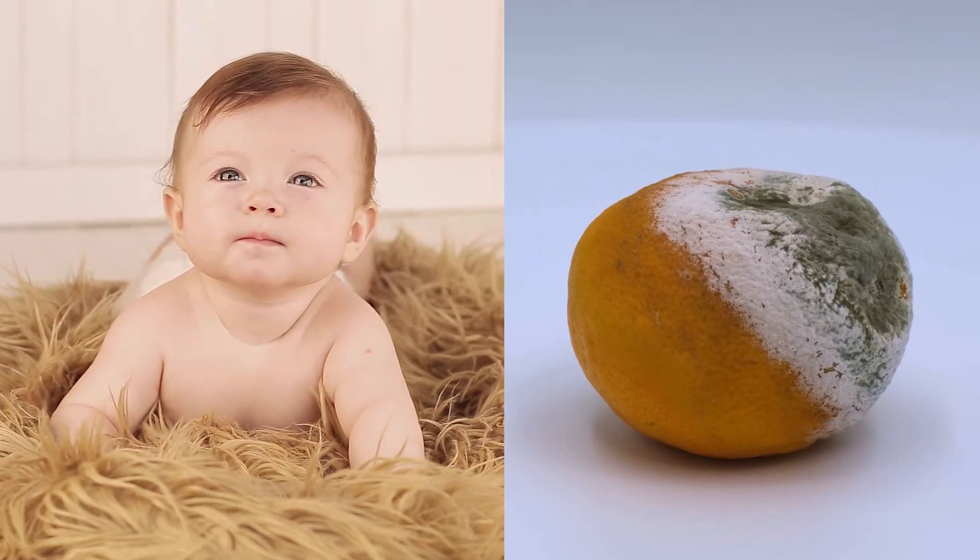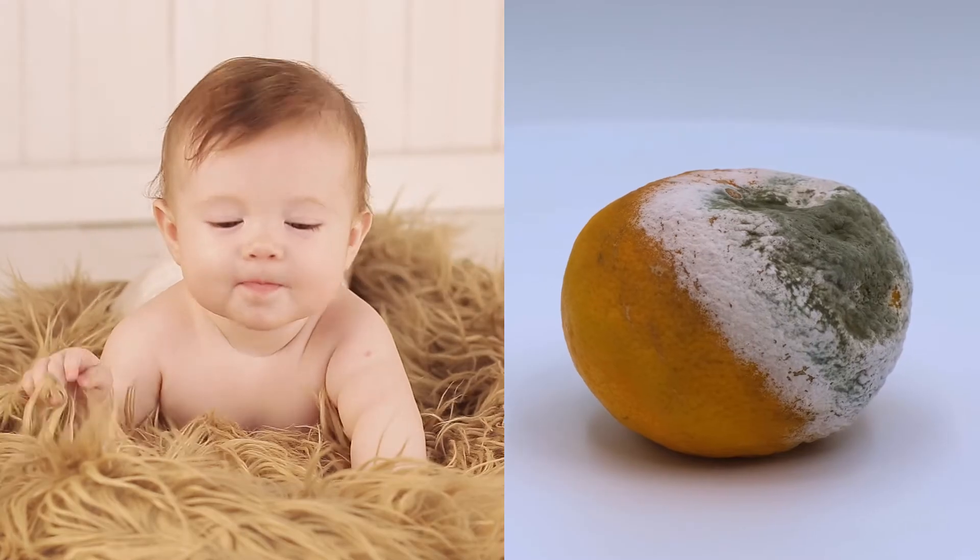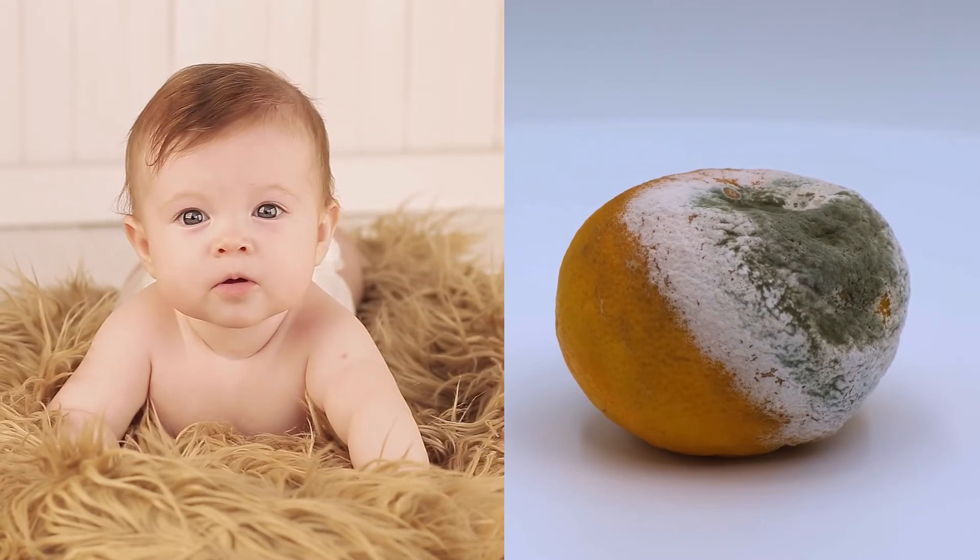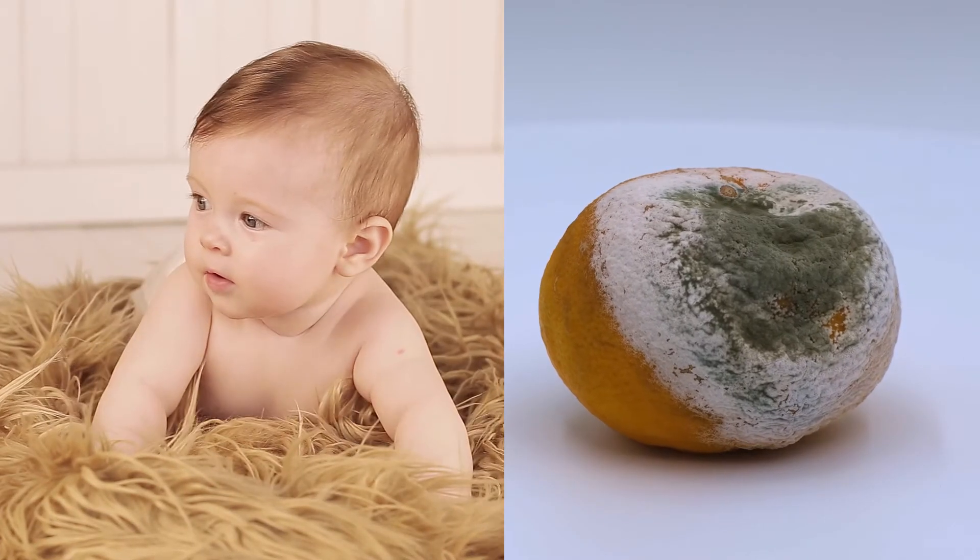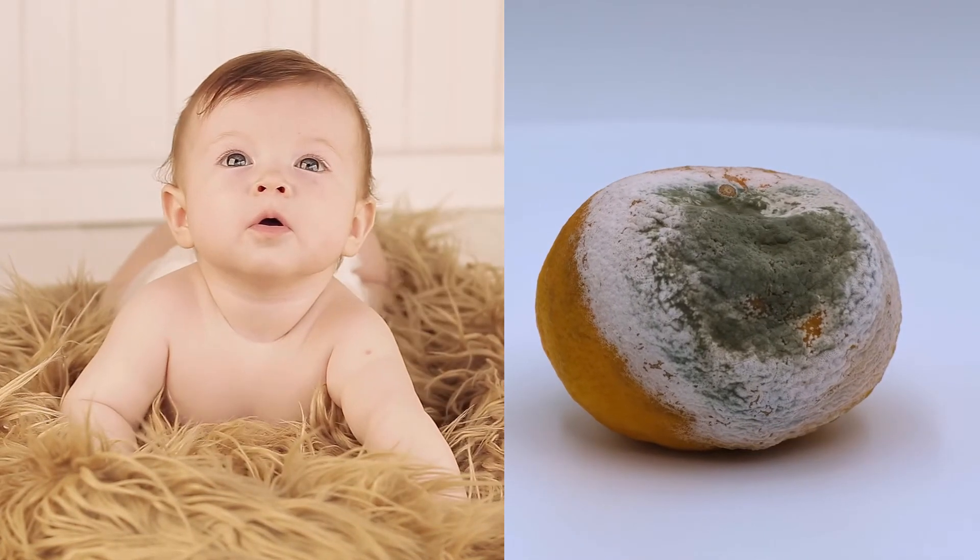What do a baby and the mold on a tangerine have in common? Cells in both of these organisms are rapidly going through the cell cycle, undergoing mitosis, and producing new cells in order to grow and survive.